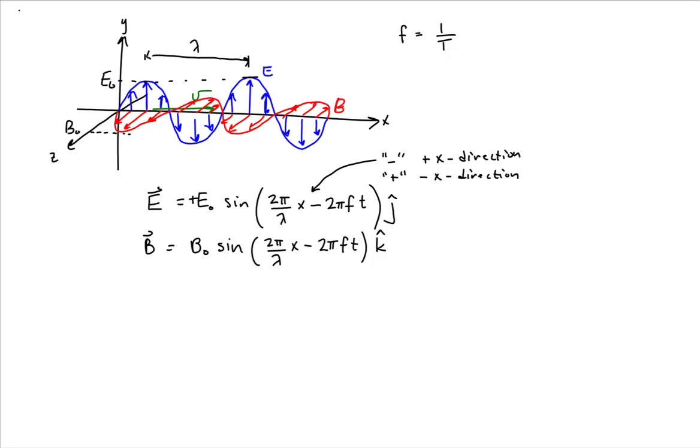Now one thing to note is the speed in which this wave is moving. Now we know that the velocity of the wave is in the direction of the cross product of the electric and the magnetic field.